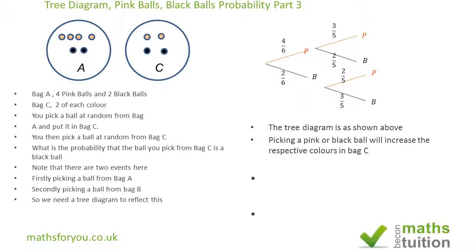We now want to find the probability of picking a black ball from Bag C. Going down the route of picking a pink ball from Bag A and then a black ball from Bag C, we multiply 4 over 6 times 2 over 5, which gives 8 over 30. If we picked a black ball from Bag A and put it into Bag C, going down that route gives us 2 over 6 times 3 over 5, which equals 6 over 30.